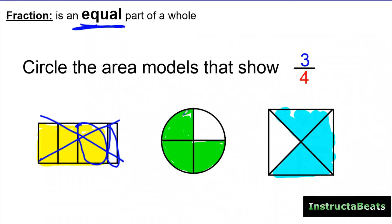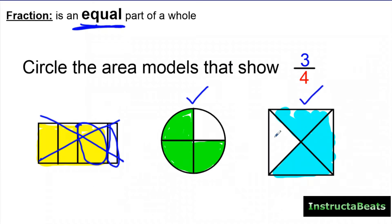Remember, fractions have to be equal. Here we have a pizza split into four different equal groups, and I shaded in three of them — so this does show 3 fourths. And here, maybe you eat at Jet's Pizza where they have rectangular square pizzas. Again, you can see there are four pieces that this whole is split up into, they're equal, and three of them are shaded. So this also represents 3 fourths. The key thing about fractions is they are equal groups.